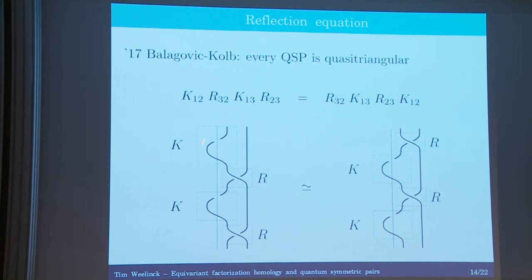I've drawn a topological picture which explains what that equation is saying — it is the equation corresponding to the braid group of a cylinder. This K is appearing literally as a K in the picture, which explains its name.